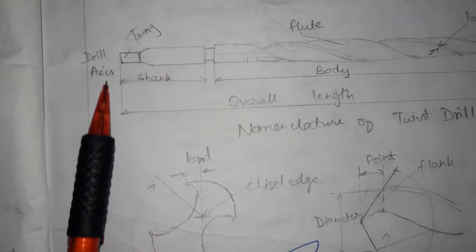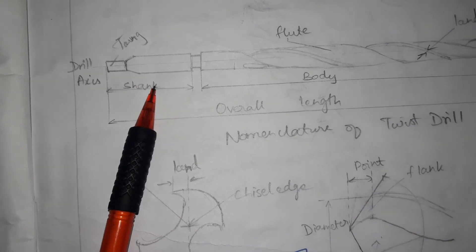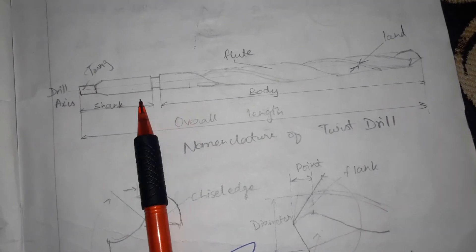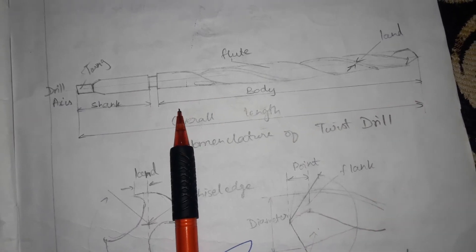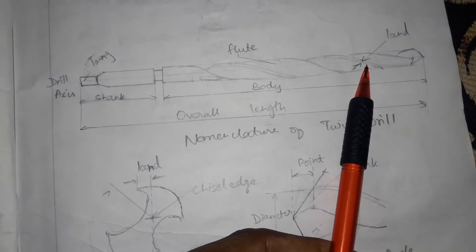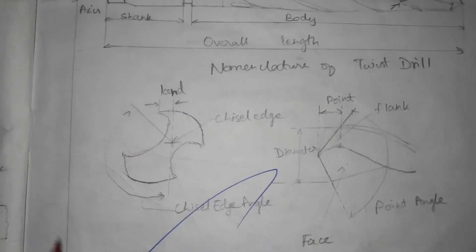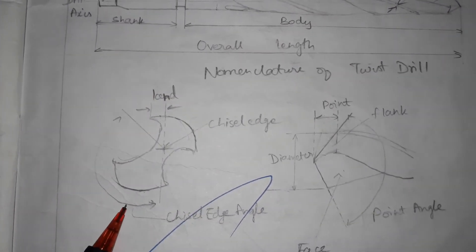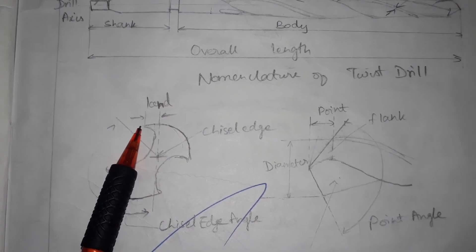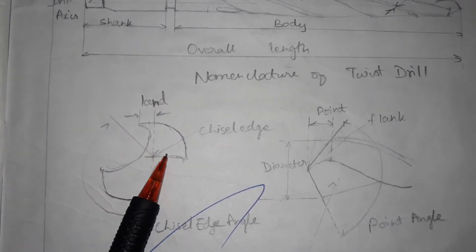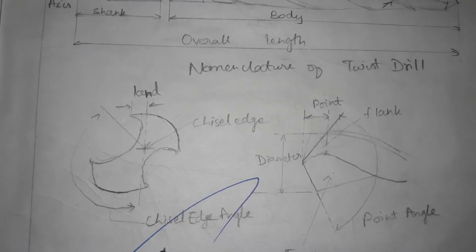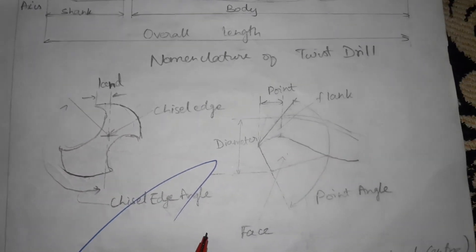This is the shank — this shank part is fixed in the spindle of the machine. The overall length includes the body of the twist drill. The flute is the curved portion of the twist drill. The land is the distance between the cutting edge at the corner of the cutting edge and the axis when a cross-section of the twist drill is taken. The chisel edge angle is shown here in the side view.